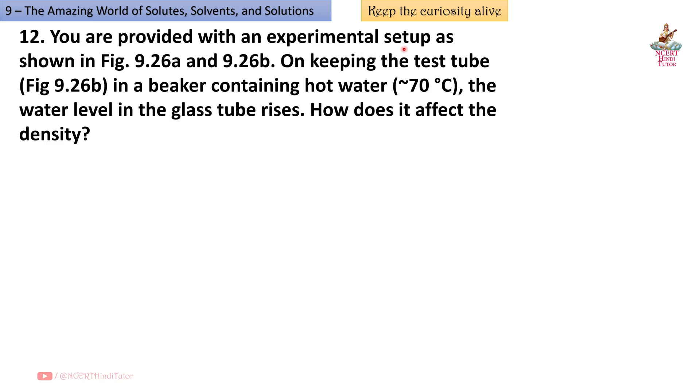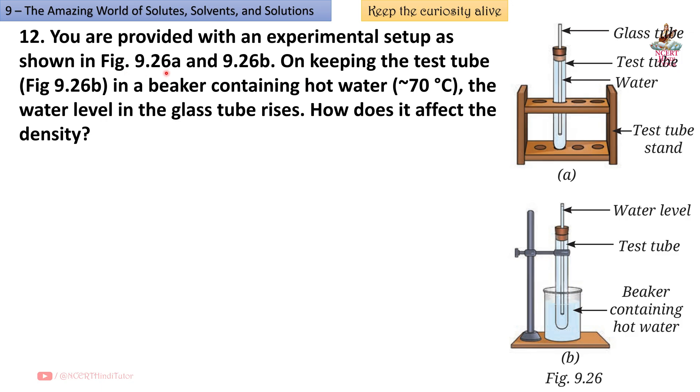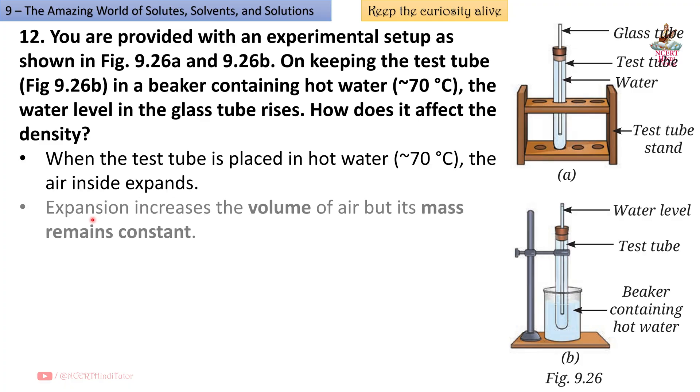Question 12: You are provided with an experimental setup as shown in figure 9.26a this one and 9.26b this one. On keeping the test tube figure 9.26b in a beaker containing hot water approximately 70 degree Celsius, the water level in the glass tube rises. How does it affect the density? So friends, as you can see, this is the beaker containing hot water, this is test tube, and this is water level.